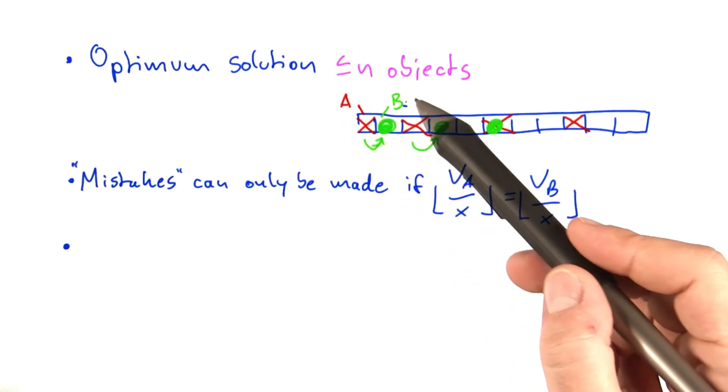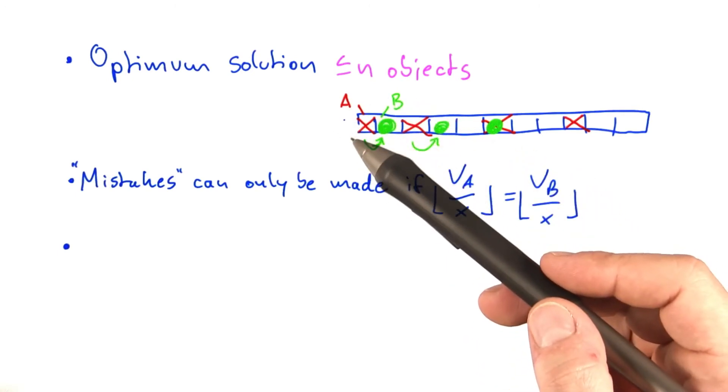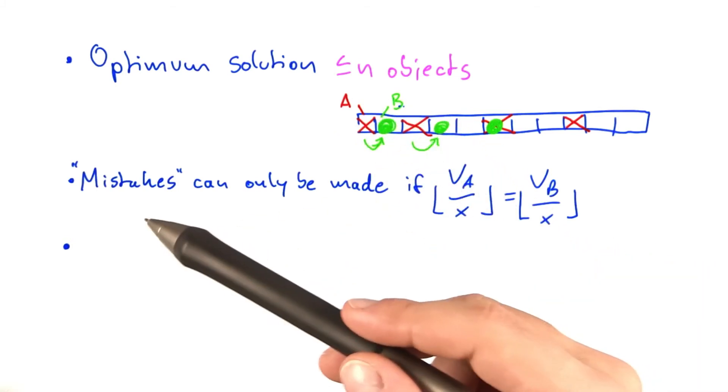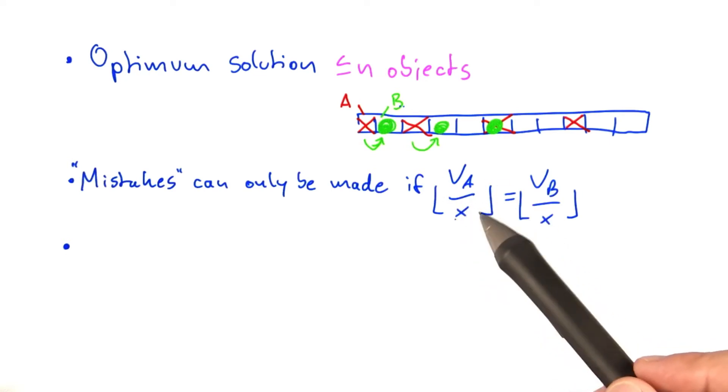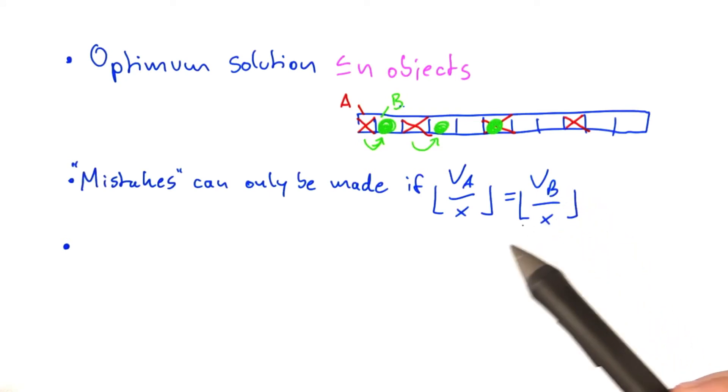So mistakes of this kind, taking the wrong object, can only be made if, to the algorithm, object a value-wise looks the same to the algorithm as object b value-wise, which means that the value of a, so the original value divided by x rounded down, is the same as the value of b divided by x, rounded down.